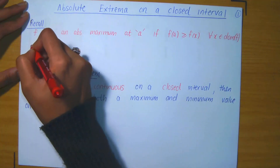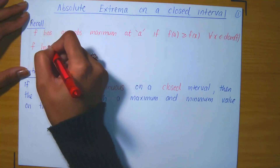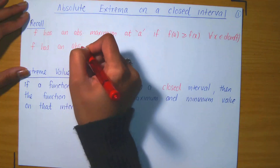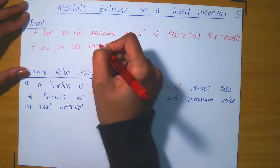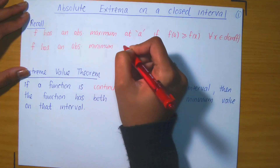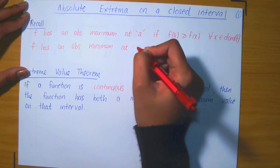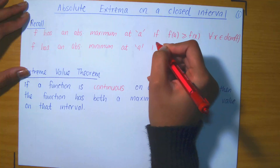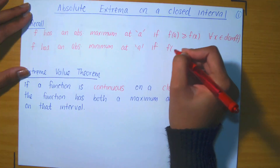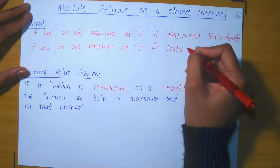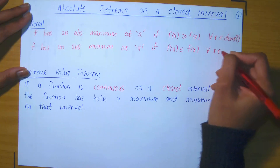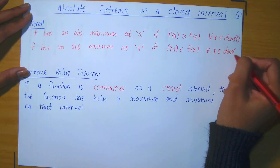Similarly, f has an absolute minimum at x equals a if f(a) is less than or equal to f(x) for all x values in the domain of your function f.